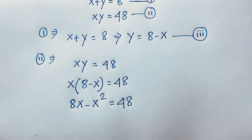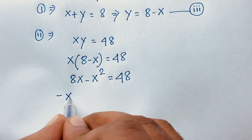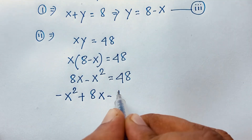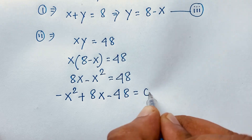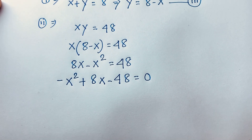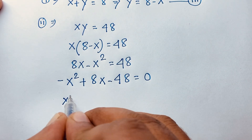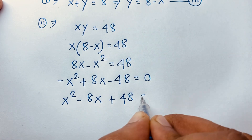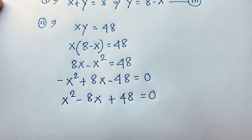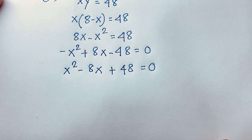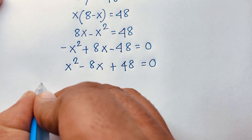Rearranging, we have negative x squared plus 8x minus 48 equals 0. Multiplying both sides by negative 1, we get x squared minus 8x plus 48 equals 0. This is a quadratic equation.